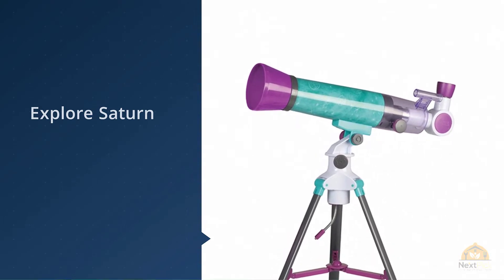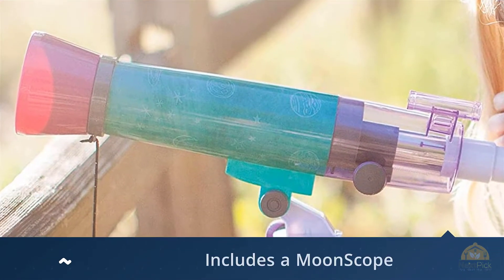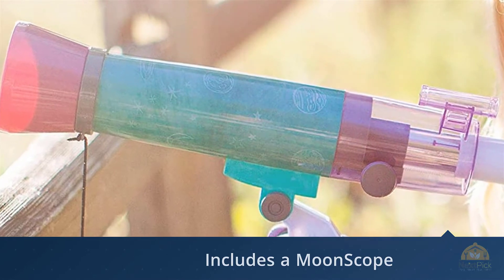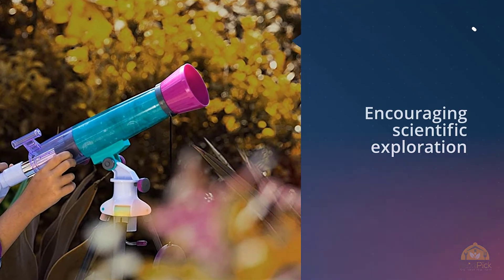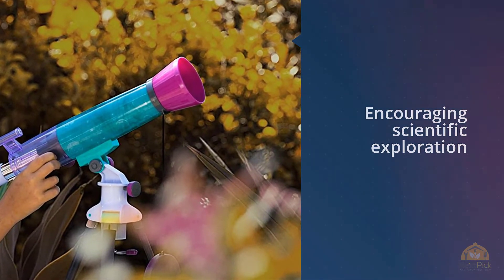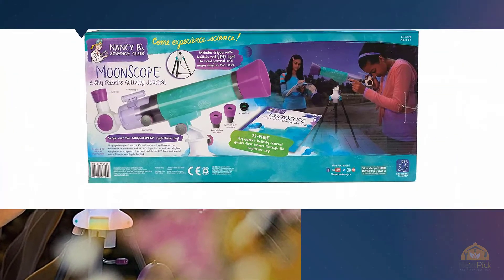The main draw of the Nancy B is its moonscape. It comes with two different eyepieces, 4 millimeters and 20 millimeters, and two different magnification settings, 18x and 90x, so that kids can zoom in on every lunar crater even on foggy nights.